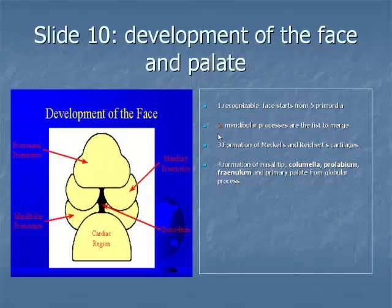Item 4: the median nasal processes approach each other to form a single globular process that in time gives rise to the nasal tip, columella, prolabium, frenulum, and the primary palate. Continued growth of the maxillary mass below the optic vesicles allows fusion with the nasolateral nasal process.